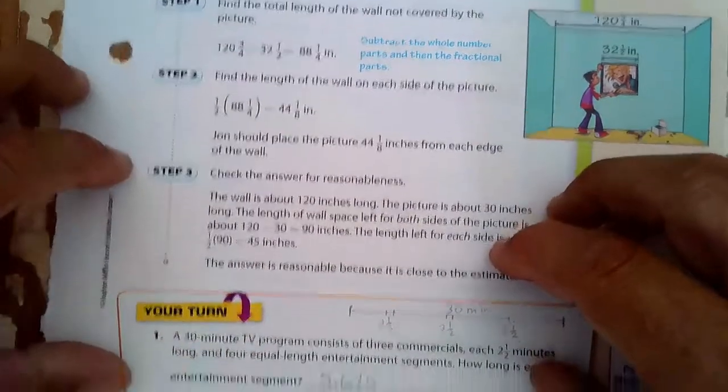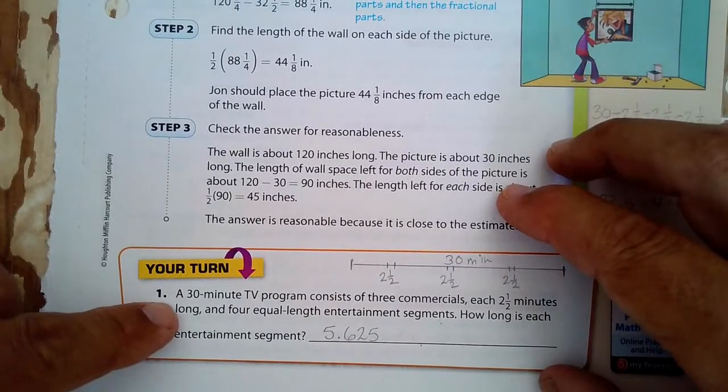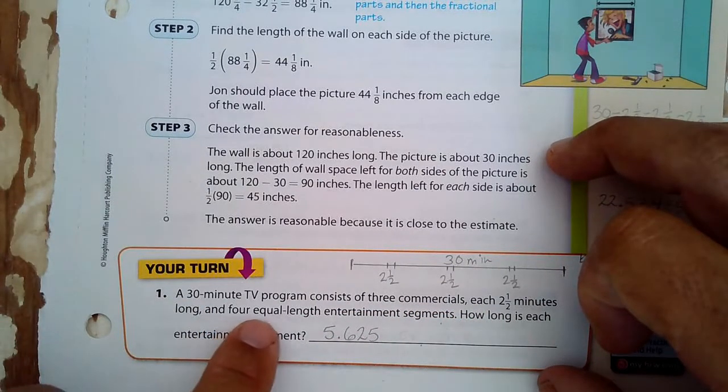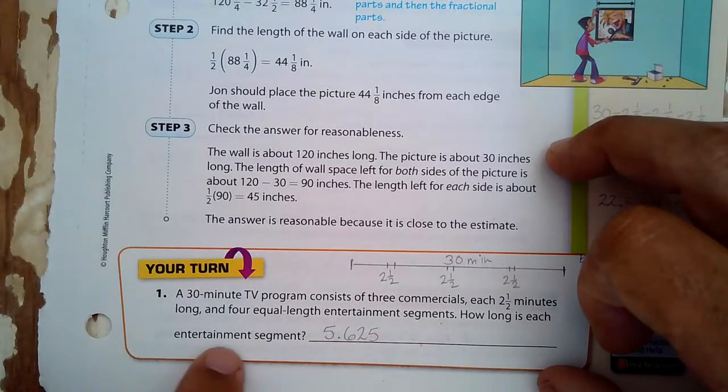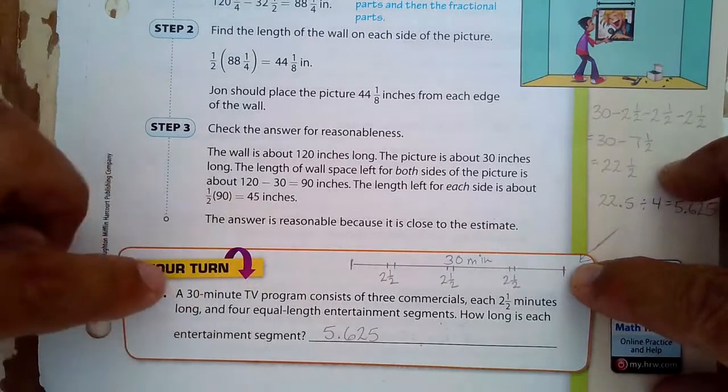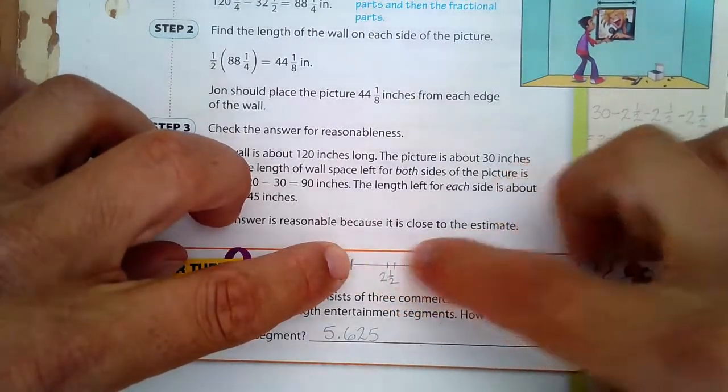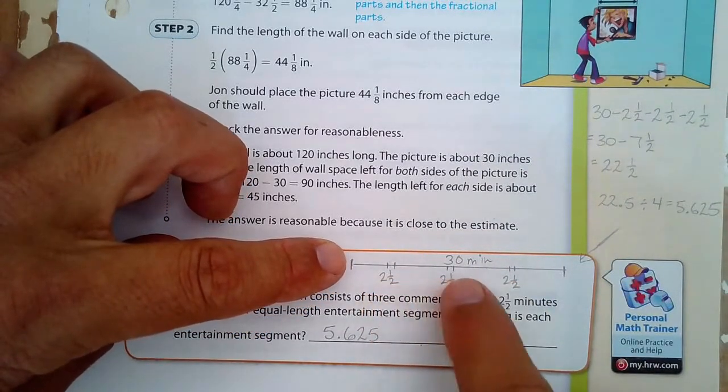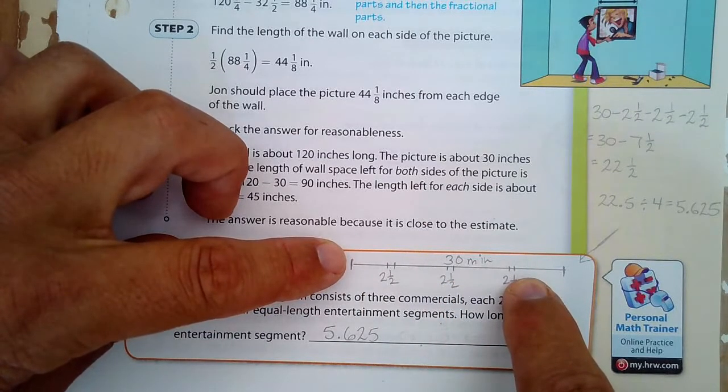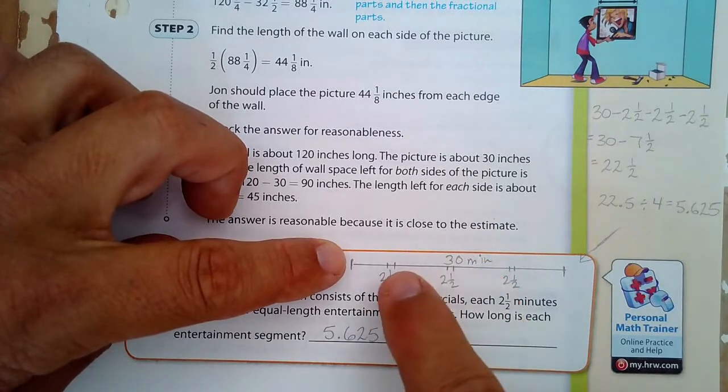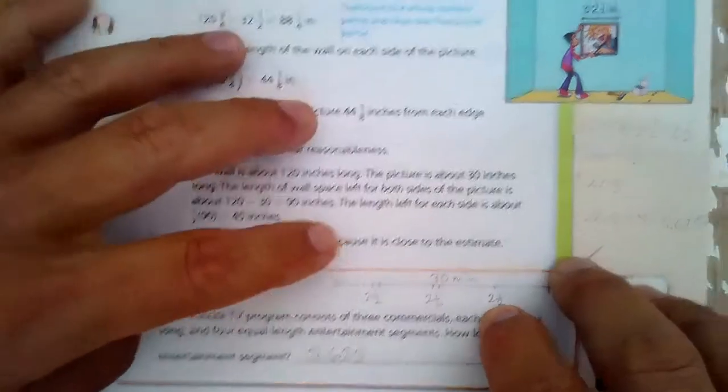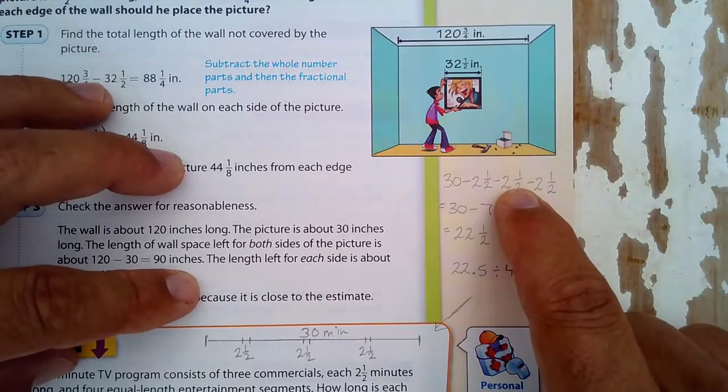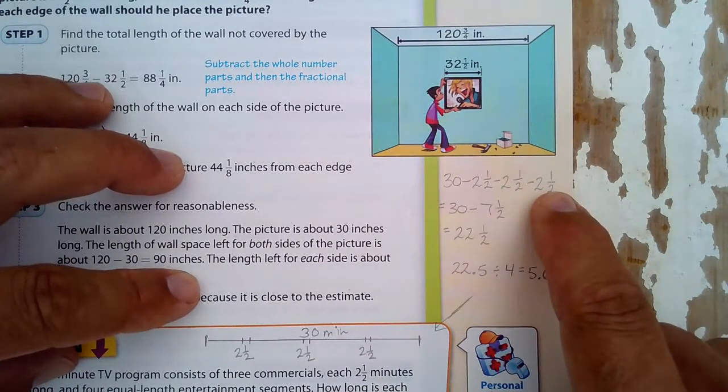At the bottom we have this Your Turn question. A 30 minute TV program consists of three commercials, each of them are 2 and a half minutes long, and four equal length entertainment segments. How long is each entertainment segment? Well, I made this number line representing the entire 30 minutes, and these little breaks right here are the commercial breaks, 2 and a half minutes long each. So I decided to first take 30 and subtract the commercials. Two and a half and two and a half, well that's 5 minutes altogether, plus another two and a half, that's 7 and a half minutes altogether.